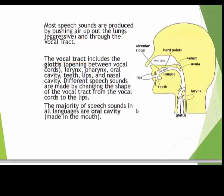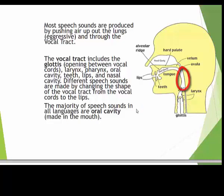Most speech sounds are produced by pushing air up out of the lungs, which is called egressive, and through the vocal tract, which includes the glottis — that opening between the vocal cords — the larynx, which houses the vocal cords, the pharynx, the oral cavity, called the mouth, as well as the nasal cavity.